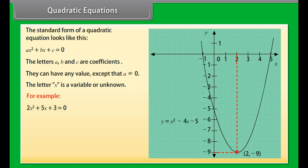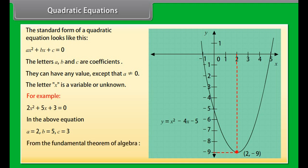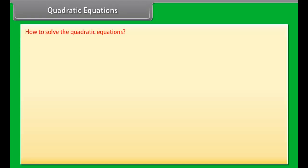Let's take an example: 2X squared plus 5X plus 3 is equal to 0. In the above equation, A is equal to 2, B is equal to 5, C is equal to 3. From the fundamental theorem of algebra, we can deduce that the quadratic equation has two roots.